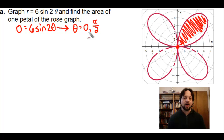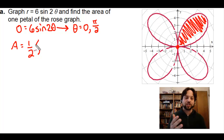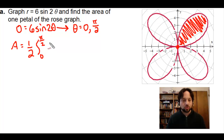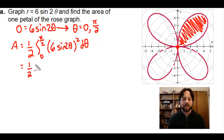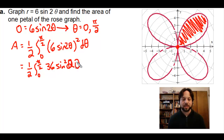You can verify that yourself. So to find the area of this petal, we integrate between zero and pi over two. The area formula for a polar region is one half times the integral from zero to pi over two of r squared dθ. Our r is 6 sin(2θ), and we square that, giving 36 sin²(2θ) dθ. There's a very important identity we need for this, which we'll use throughout this lesson.